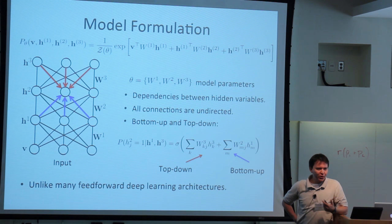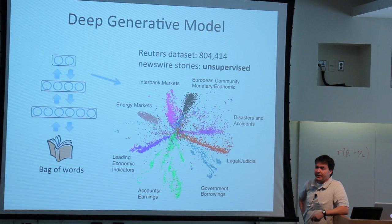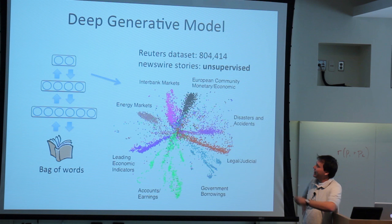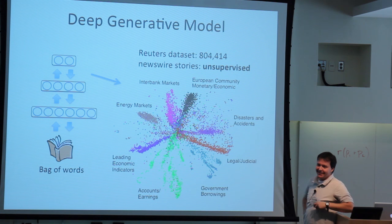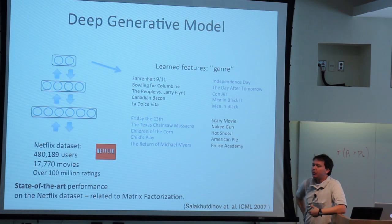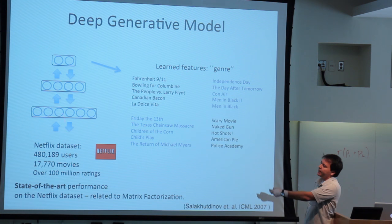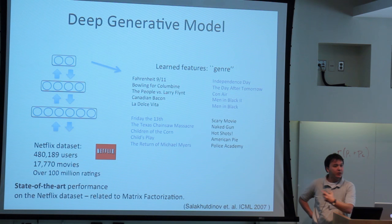Unlike many feed-forward architectures, you can do interesting things with these models. For example, taking bag-of-words — not vision-specific — if you look at the low-level representation the model finds when fit on the Reuters dataset using bag-of-words from web pages, it finds interesting structure. It finds topics like 'European community' placed next to 'disasters and accidents,' revealing correlations between words. You can also apply these models to Netflix data, finding interesting structure in high-level representations.